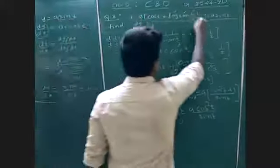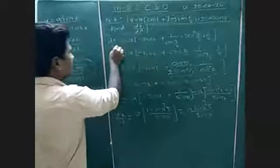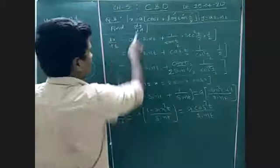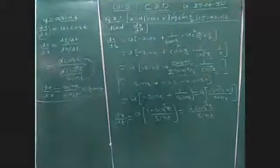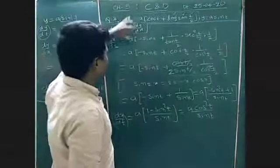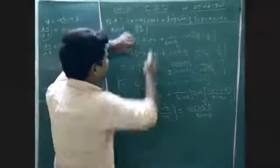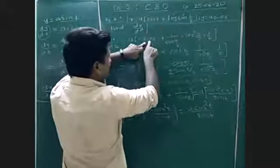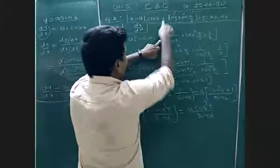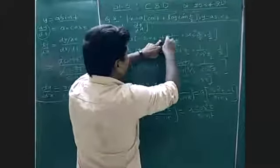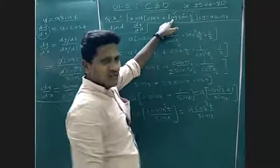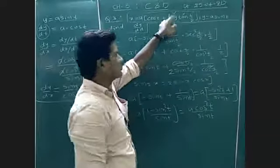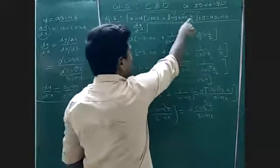I am taking x. This is x. I want to differentiate with respect to t. A is a constant. Here a is a constant. As it is, now half t derivative minus sin t plus, as it is. Here we can apply chain rule because it is not a standard differentiation, so chain rule. Three functions are there.